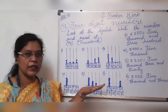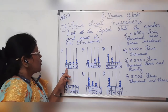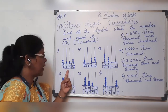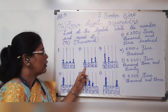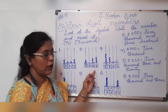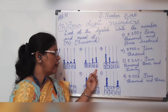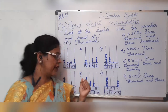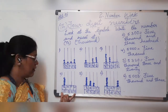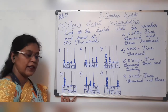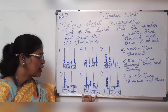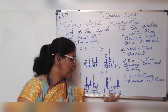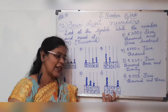We will read all the numbers once. First sum: 2,112 — two thousand one hundred and twelve. Second one: 2,034 — two thousand and thirty-four. Third one: 5,300 — five thousand three hundred. Fourth one is a round figure: 5,000 — five thousand. Fifth one: 5,320 — five thousand three hundred and twenty. And sixth one: 5,003 — five thousand and three.